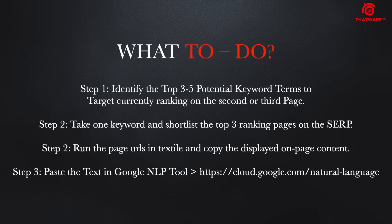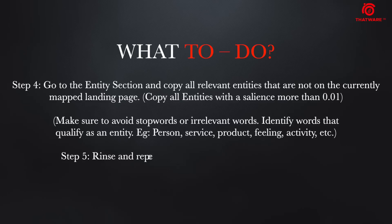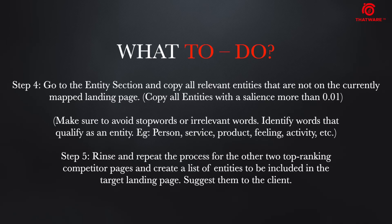The link is cloud.google.com/natural-language. You can paste the URL you are trying to rank for into this tool, go to the entity section, and copy all relevant entities that are not on the currently mapped landing pages. Copy all entities with a salience score of more than 0.01. Make sure to avoid generic top-level or irrelevant words that qualify as an entity, such as person, service, product, or activity. You can repeat this for multiple competitors until you create a list of entities to be included in your landing pages, which you can then suggest to your client.